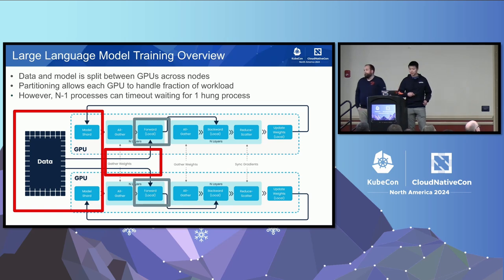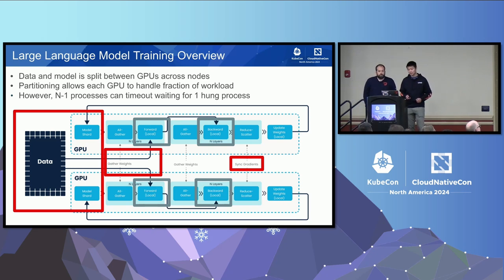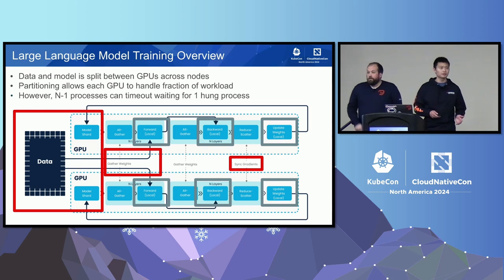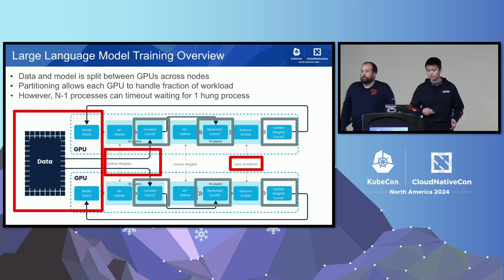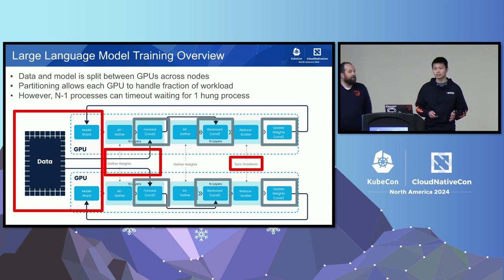Before each forward pass, each process on the GPU — otherwise known as a rank — needs to gather weights across GPUs using a NCCL all-gather operation, ensuring each rank has the required parameters for the next computation. During the forward pass, each model performs its own local computation. On the backward pass, each rank computes gradients locally for its shard of the model. After computing these gradients, a reduce-scatter NCCL operation distributes and averages the gradients across all GPU devices. Once synchronized, each rank updates its local shard, and the cycle repeats. If even one process is hung, it can lead to timeout for the other N-1 training processes, halting the entire training loop.